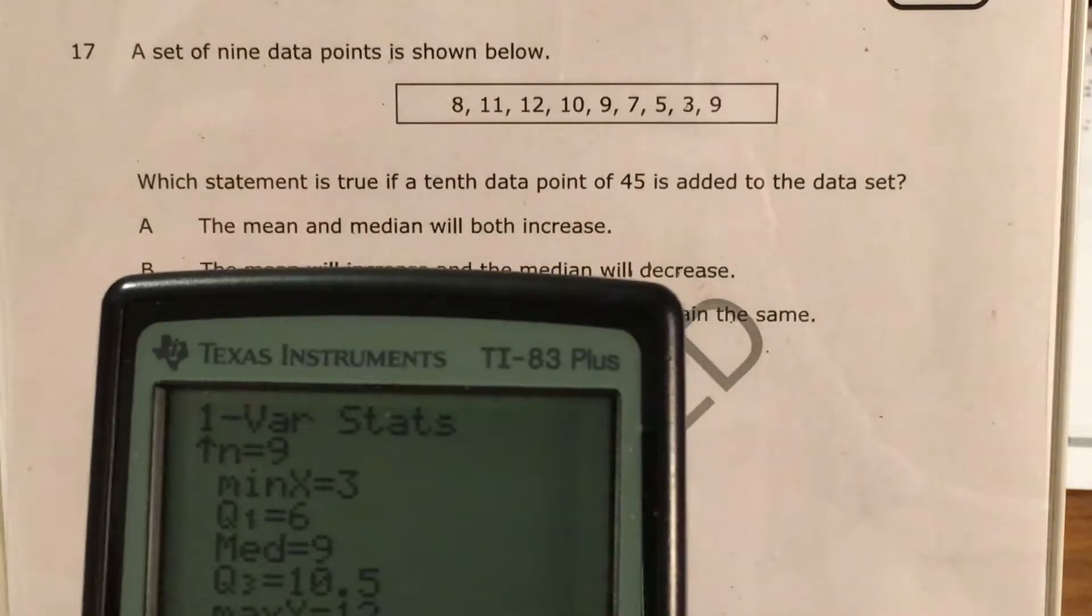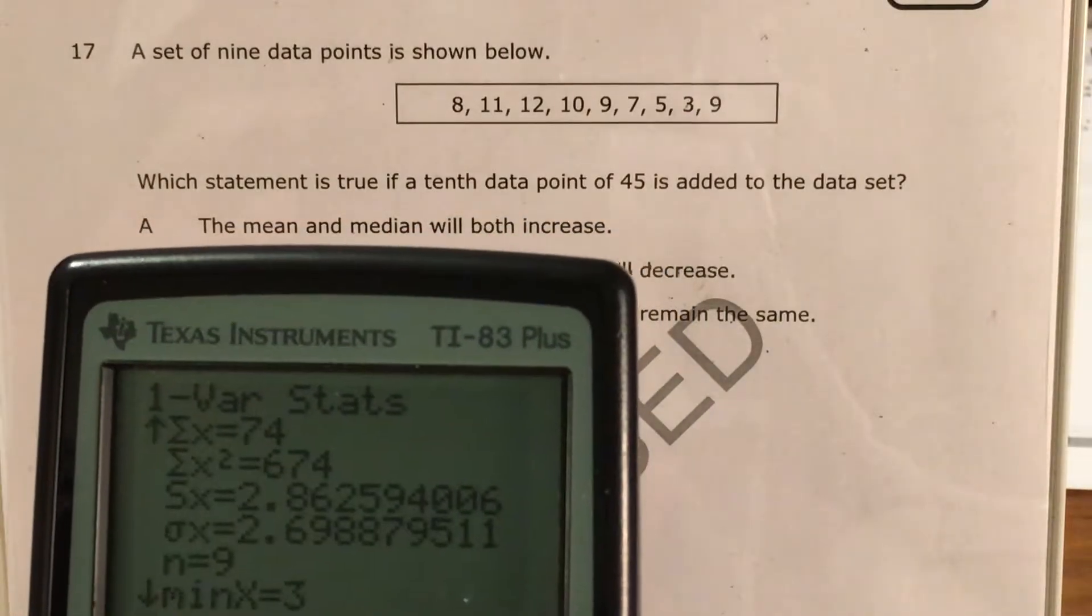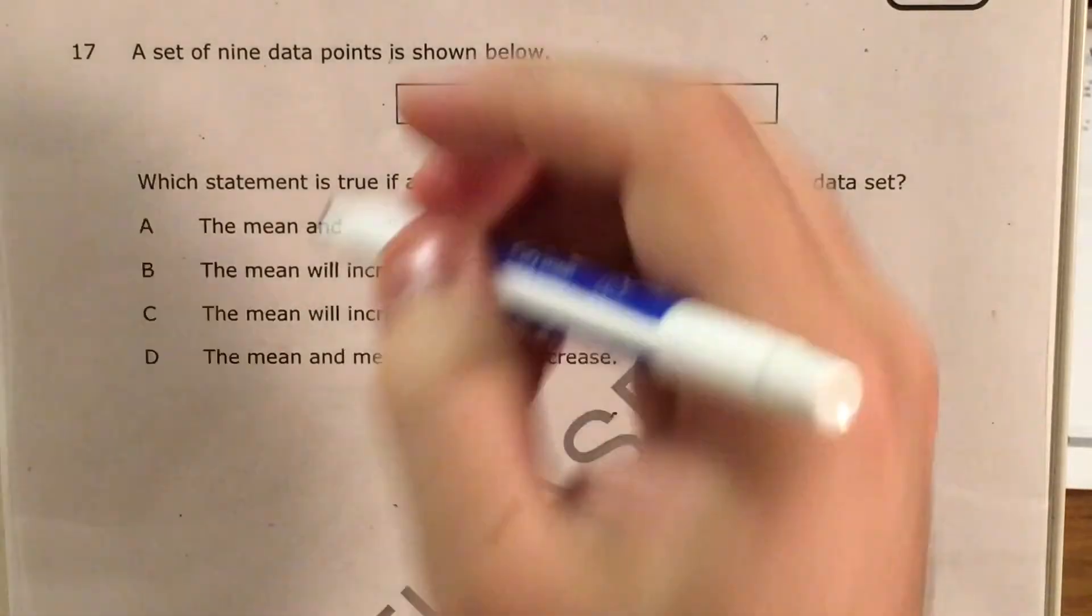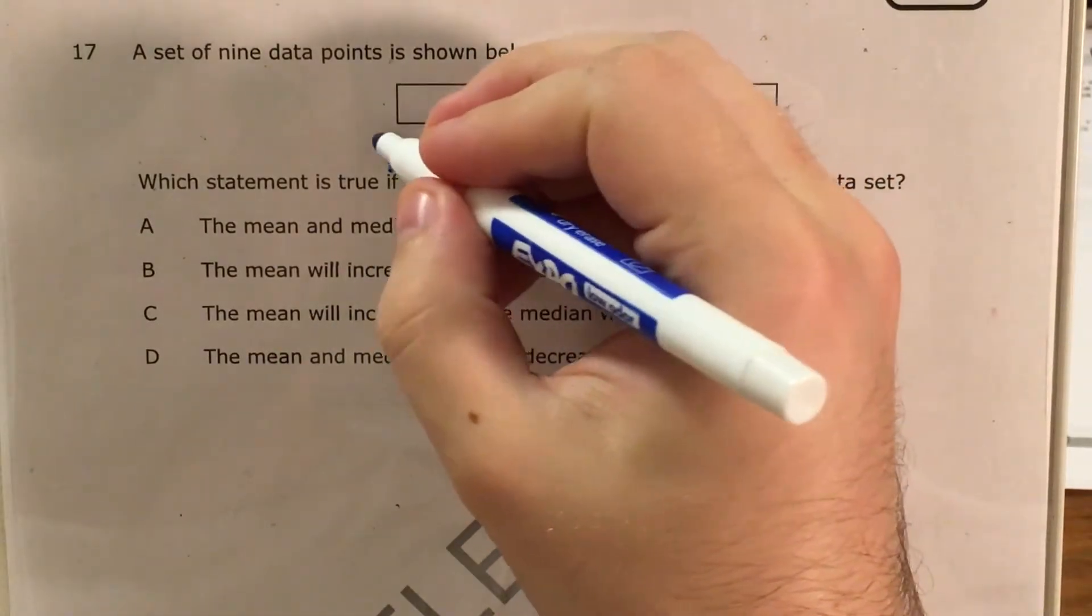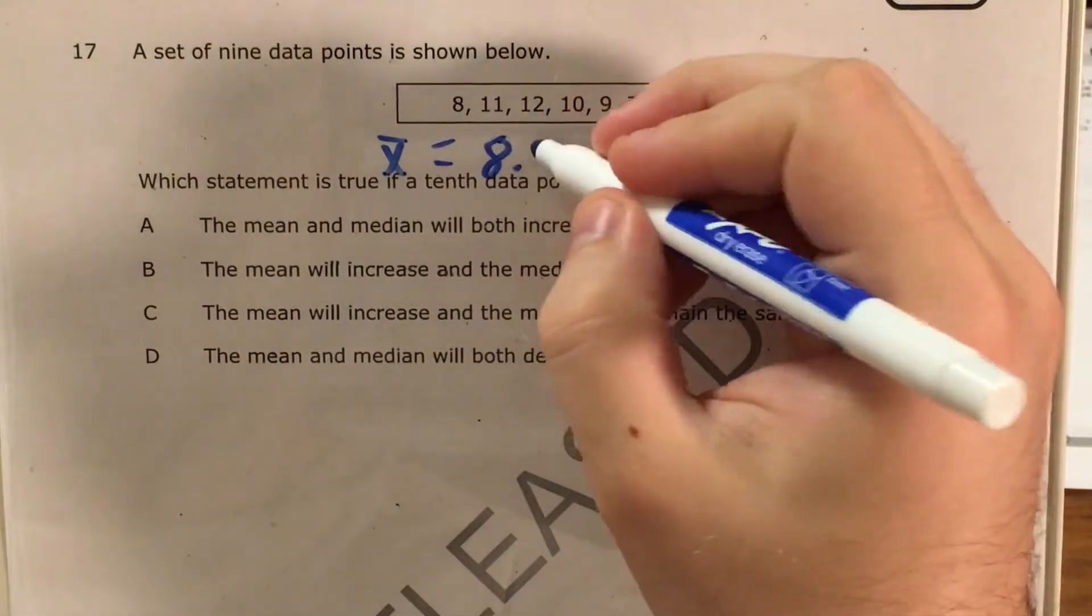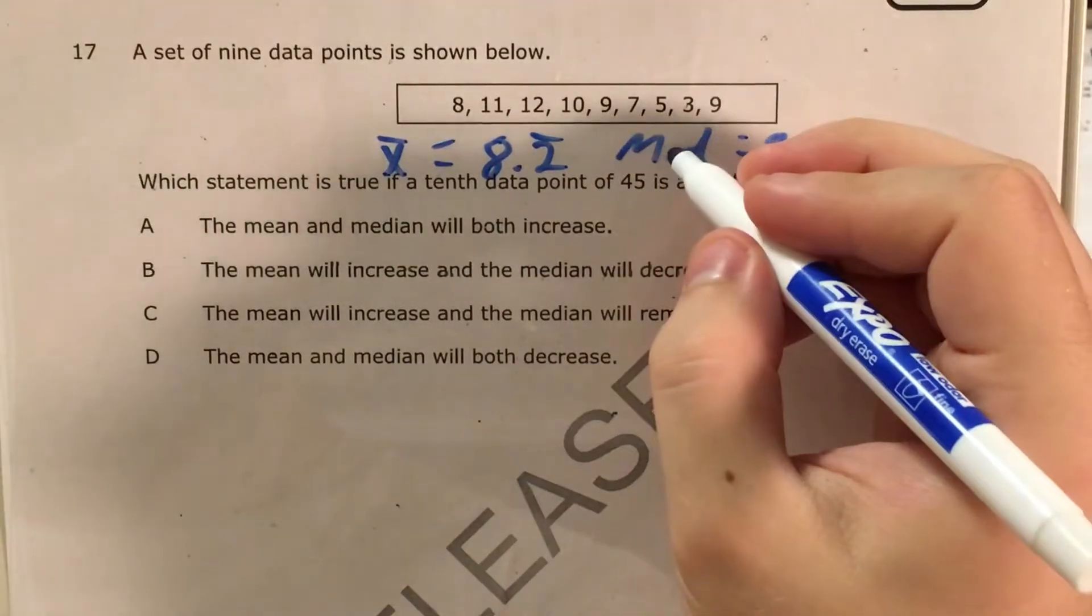So my mean, X bar, and I'm going to write mean like this from now on in this question, equals 8.2 repeating. My median was 9.